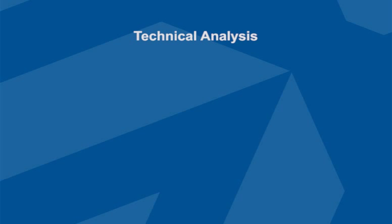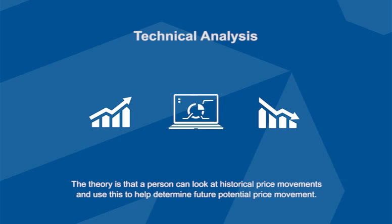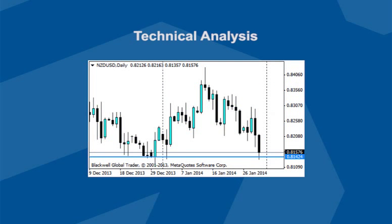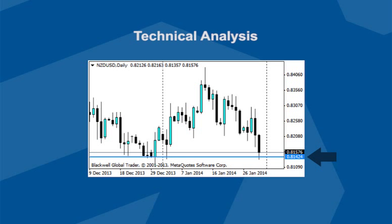Technical analysis is the framework in which traders study price movements. The theory is that by looking at the historical price movements of a currency pair, a trader can use that information to help determine the future potential price direction. For example, looking at the New Zealand/US Dollar (Kiwi) on a daily chart, you can see the currency pair very rarely goes below a certain level, called the support level. When the pair hits this support level, it rarely breaks through, so it could be a good opportunity to go long — meaning to buy the currency pair — with the expectation that it could increase in value from there.